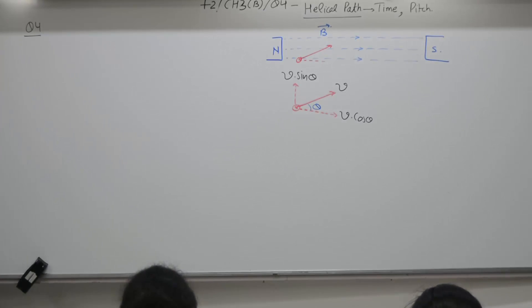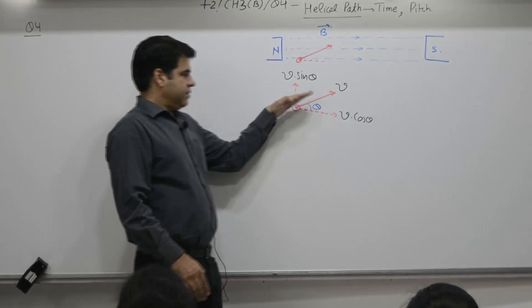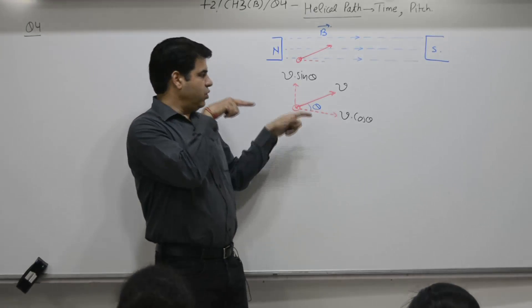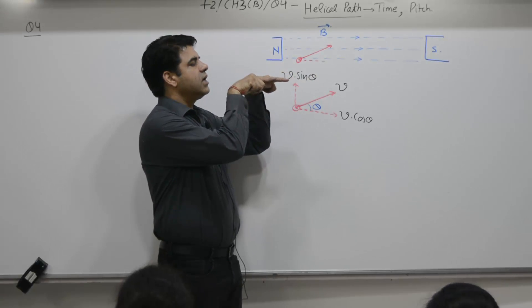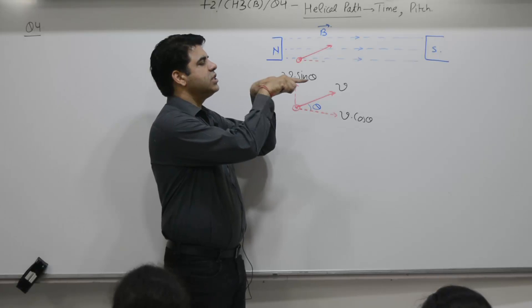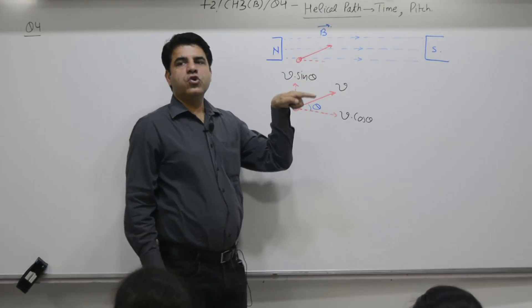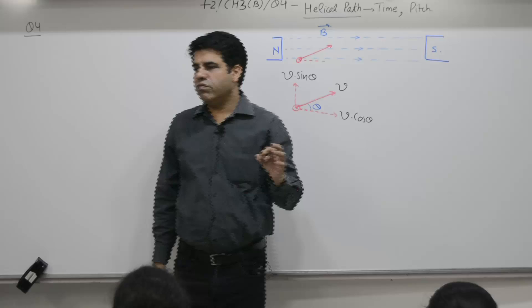Now, in the previous lecture, what we have covered is, what is the effect of v cos theta? Only this. Magnetic field is this one. Particle having parallel velocity to B, force acting is zero. Why zero?